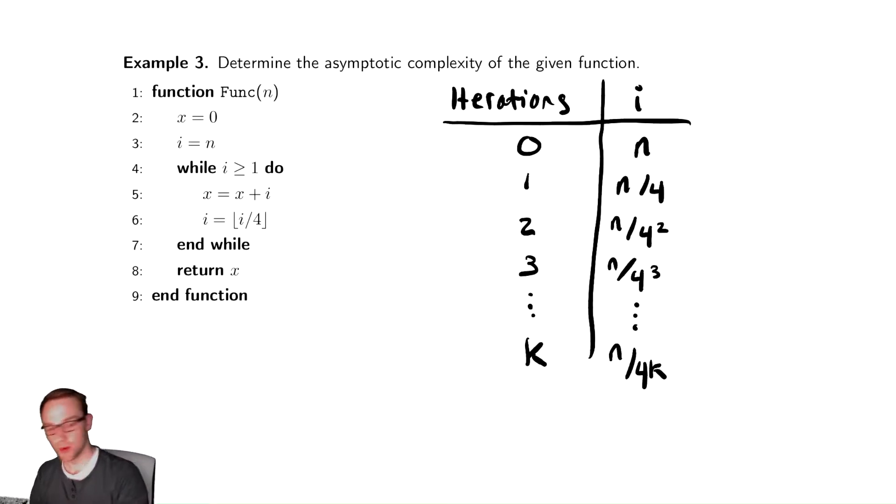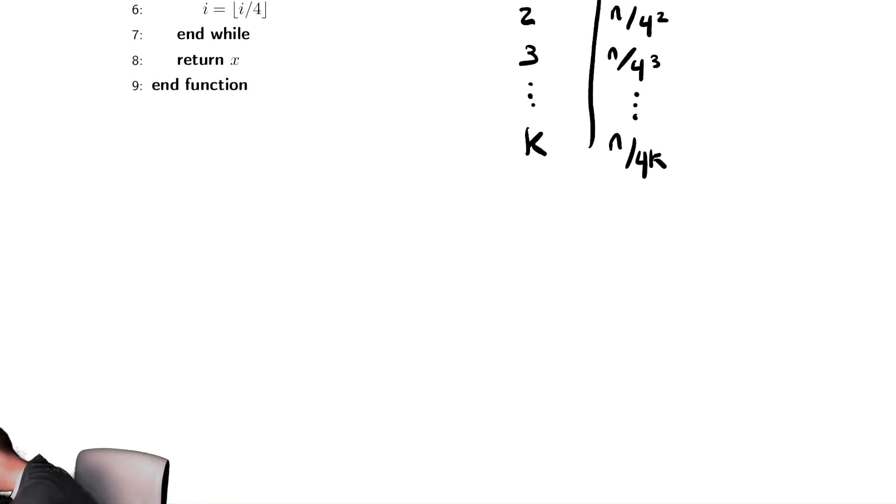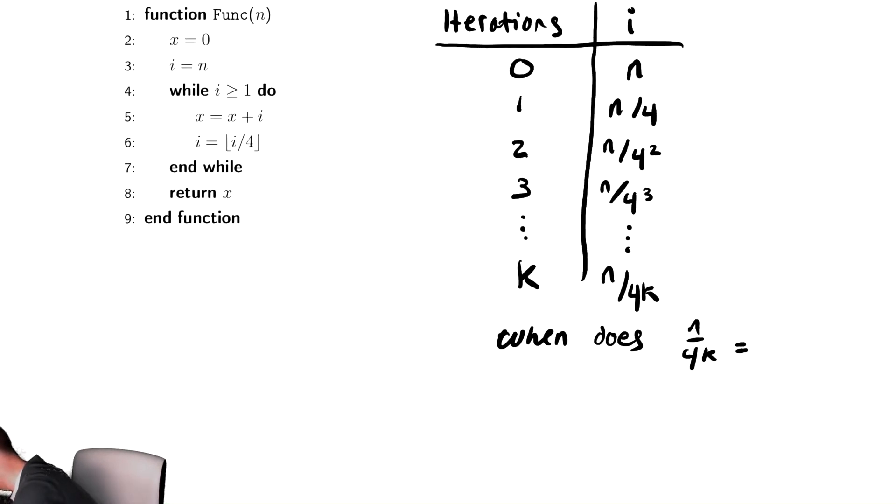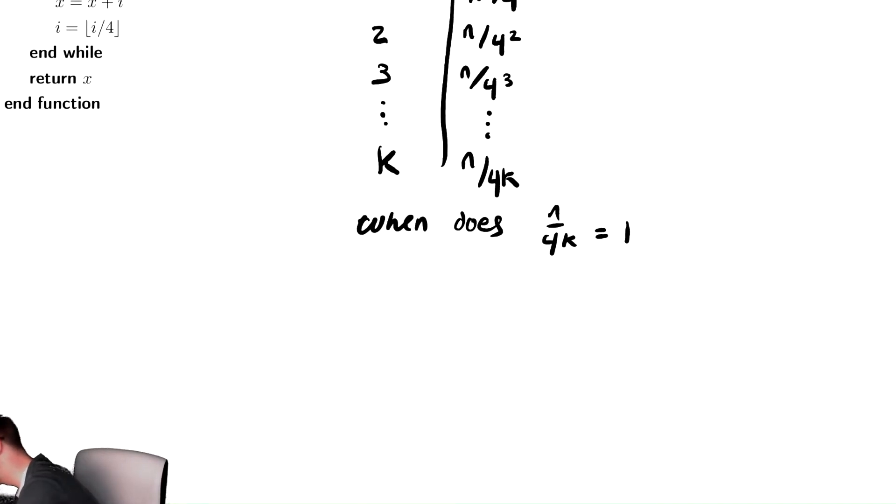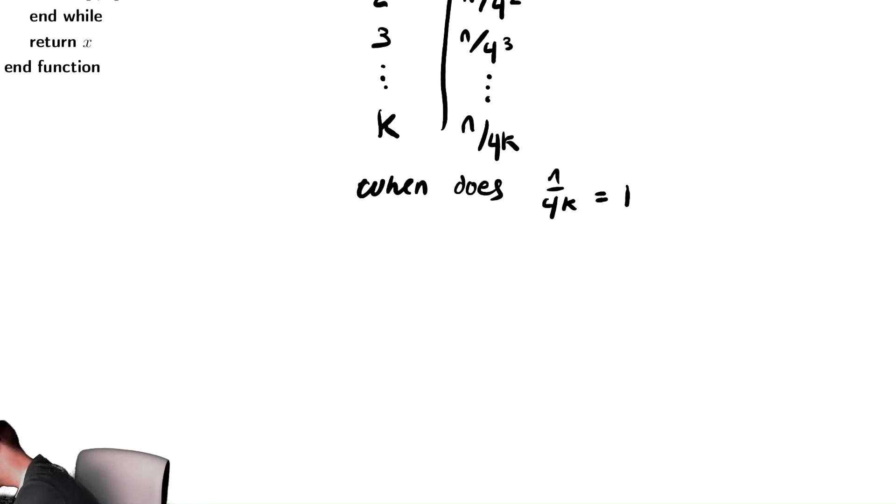Thus, what are we going to do? We are going to try to solve when does n divided by 4 to the k equal our stopping condition. And in this case, our stopping condition is 1. We want to try to solve that for k. So let's multiply both sides by 4 to the k, and we get n equals 4 to the k. Take a log base 4 of both sides. Log base 4 of n is equal to k.